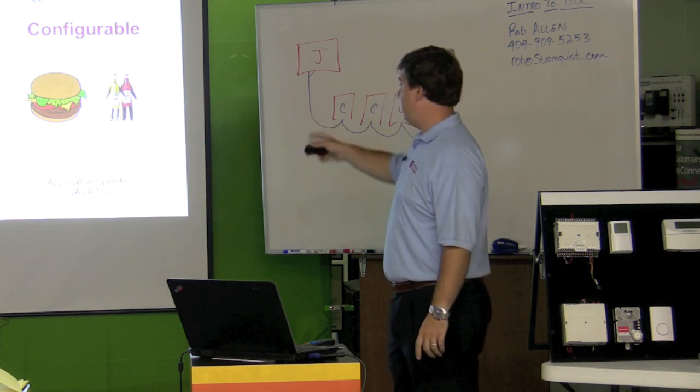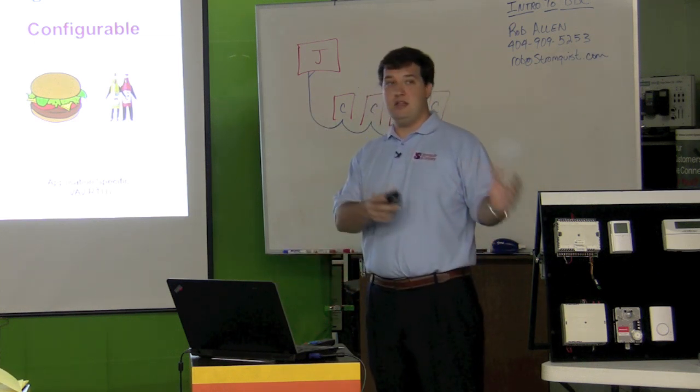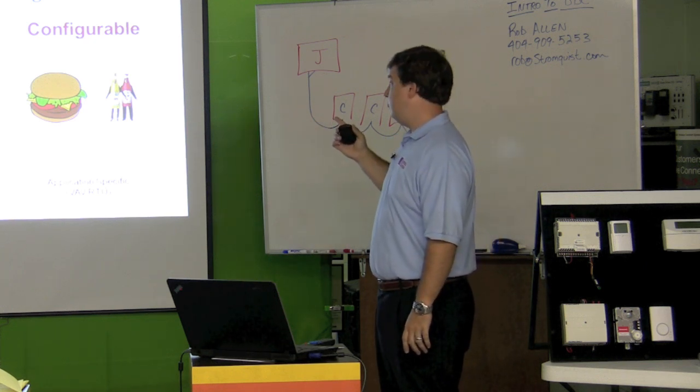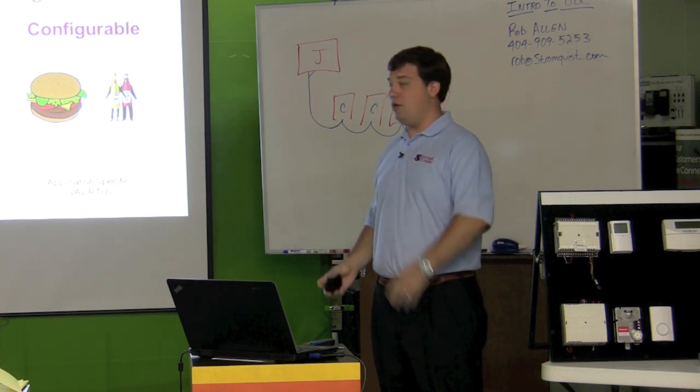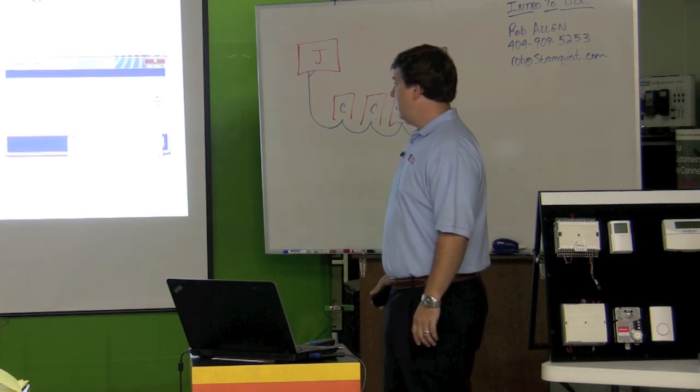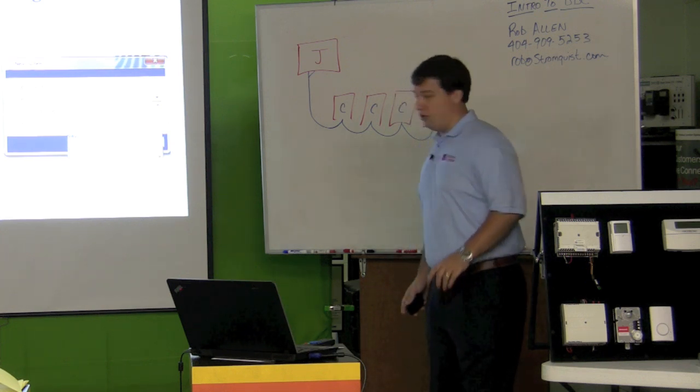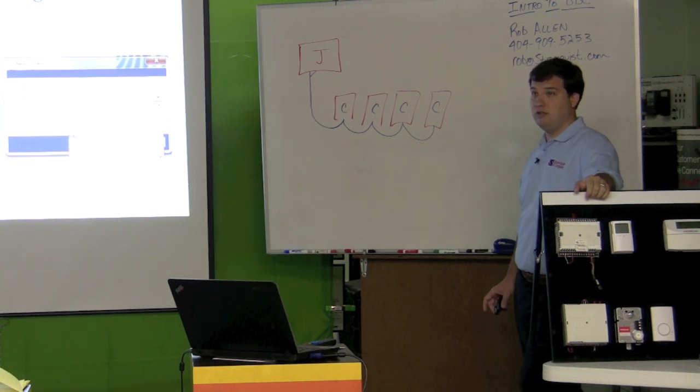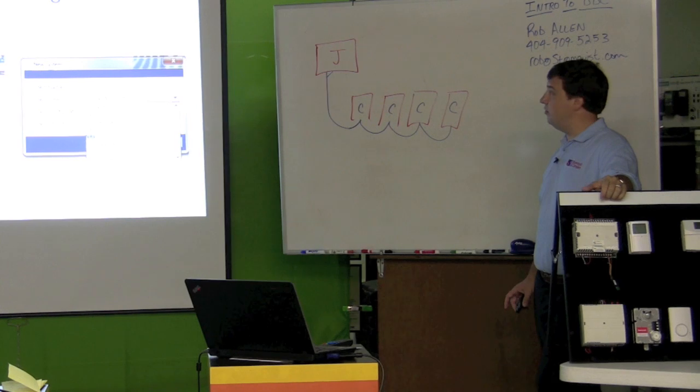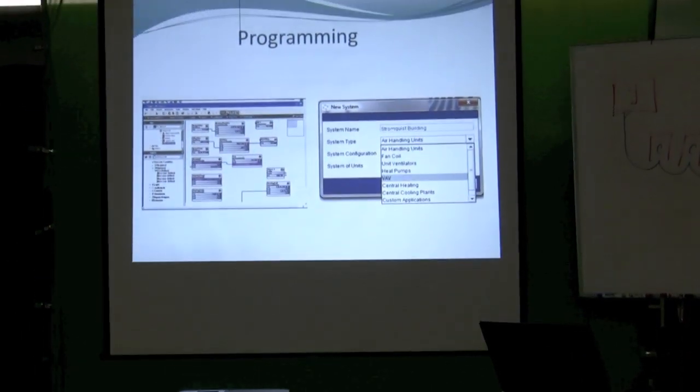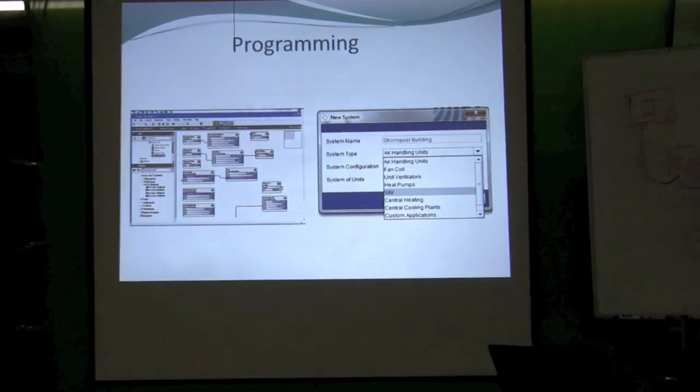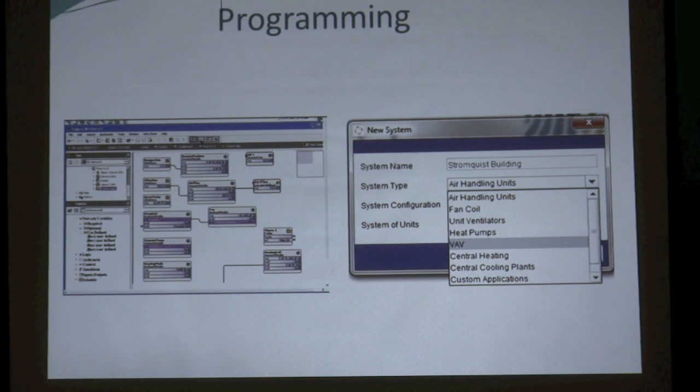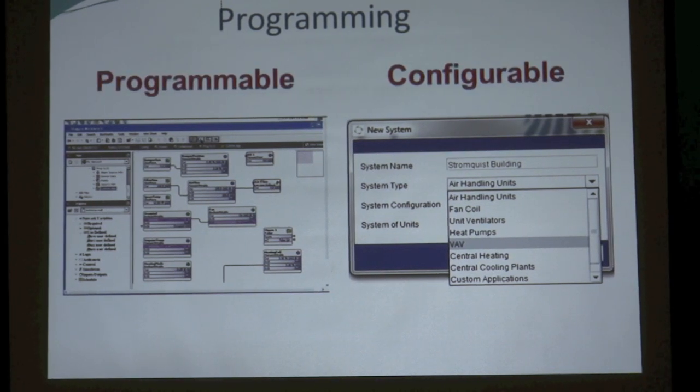You're going to see configurable a lot of times in application specific. So you may go and wire up something via a wire sheet, something like that. But then when you get to the VAV portion, it's a drop down menu. Alright, who wants to tell me which one is programmable? If you think it's on the left, raise your hand. If the programmable example is on the left, raise your hand. If you think it's on the right, raise your hand. Not everybody raised their hand. Not everybody is playing this game.